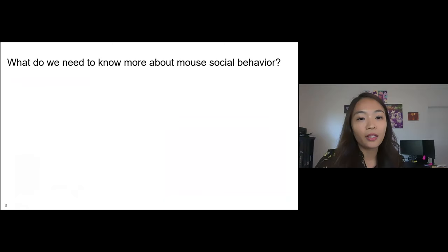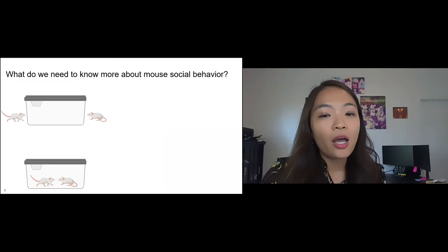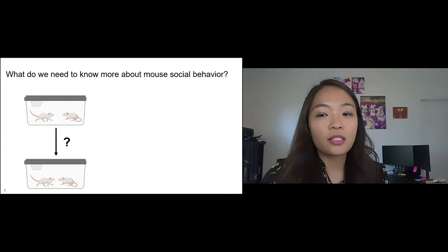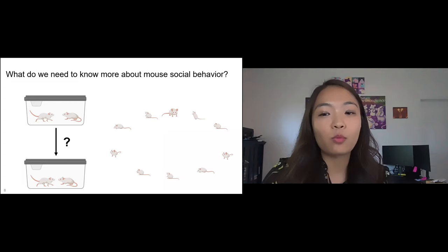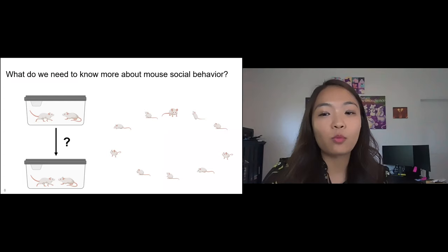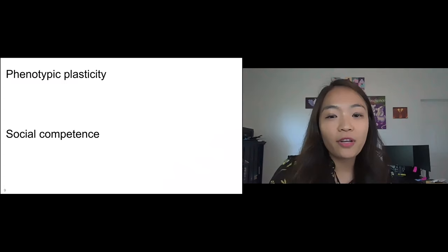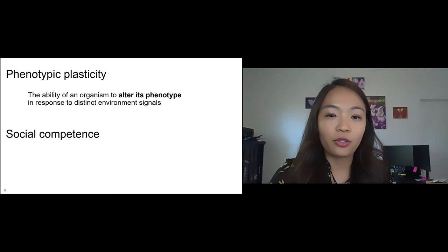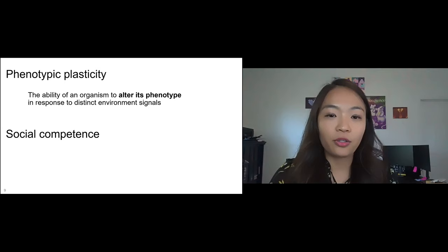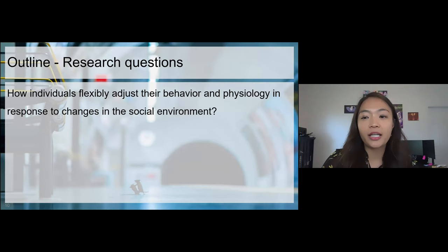Dominance hierarchy exists in pair-housed animals as well, and this has been extensively studied within that pair-housing system relating to neurobiology and physiology. However, we still don't know much about how unfamiliar individuals form dyadic relationships, nor how it works when animals are housed in a large social group with complex social dynamics. My research focused on filling these gaps. The two overarching concepts across my experiments are phenotypic plasticity — one's ability to adjust its phenotype in response to environment — and social competence, which adds that these changes should be appropriate to the given social context.